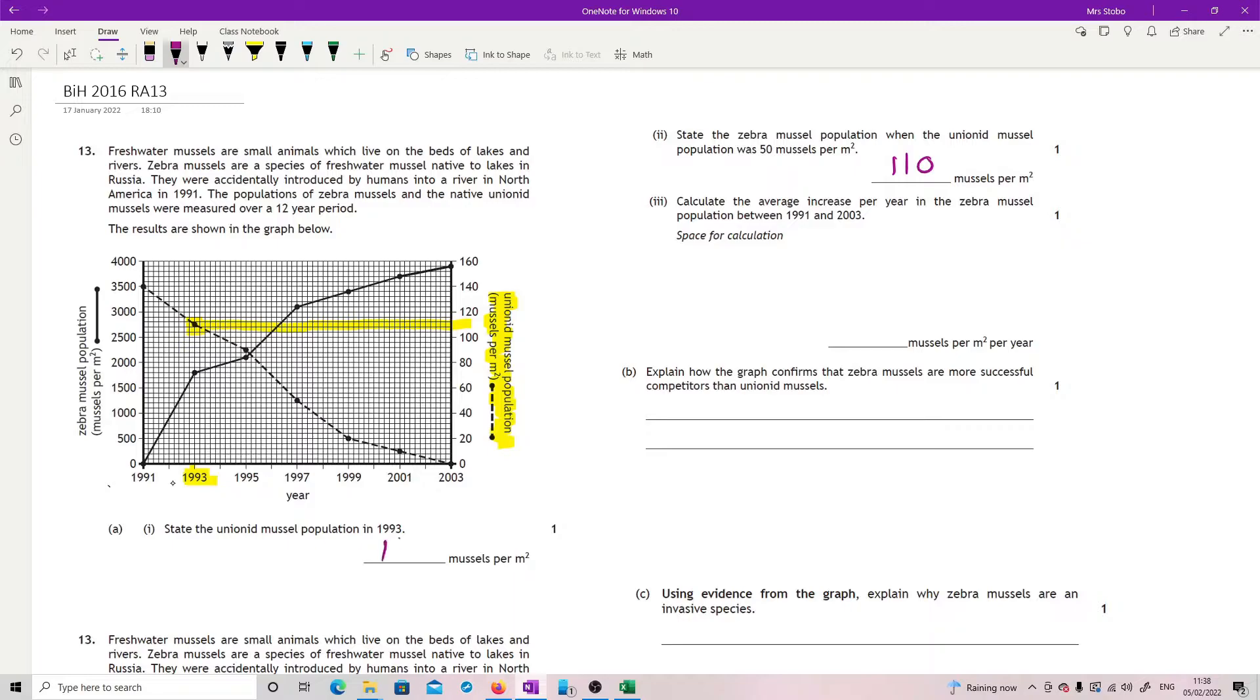Oh sorry, 110. Wrong place. And let's rule out that one. Okay, for part two, state the zebra mussel population when the unionid mussel population was 50 mussels per meter squared.